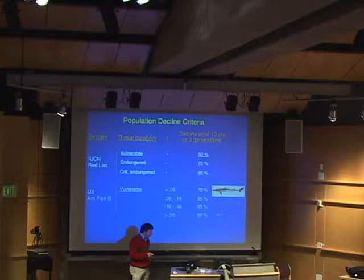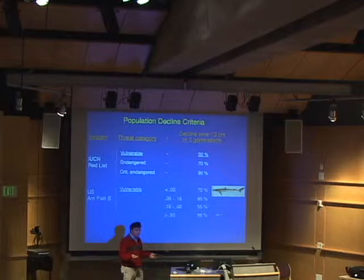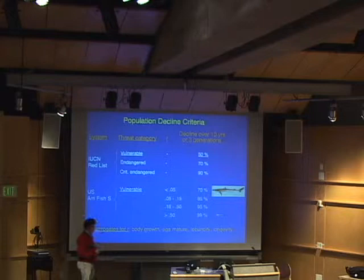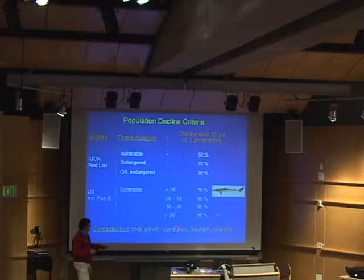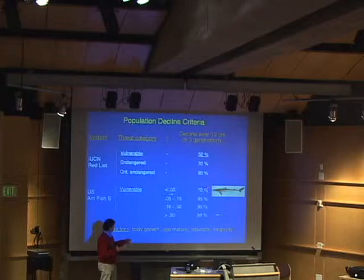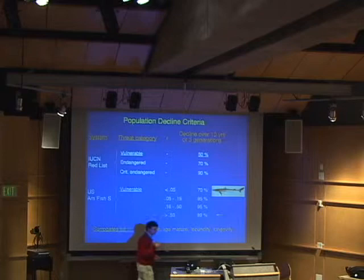The problem is, of course, R is a very difficult thing to measure. Everybody who works on this problem knows that it's hard to know how fast something could bounce back. So there are surrogates allowed, and this is where we go back to my interest in life histories. Under the American Fisheries Society rules, if you don't know what R is, you could look at the body growth rate, age of maturity, fecundity, longevity. If you only produce about 100 or fewer young a year, like sharks would, that would correspond to the 70% threshold. And if it was more than 5 million or something like that, you could decline 99%.